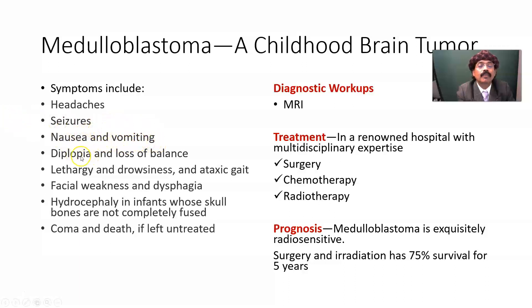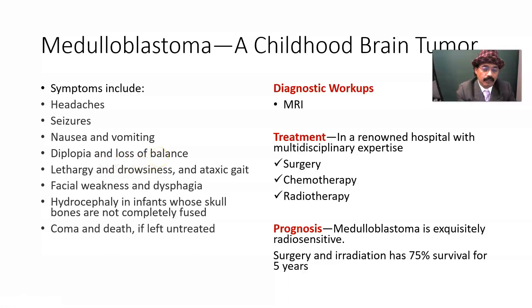Diplopia and loss of balance may occur. Diplopia happens because extraocular muscles are innervated by the third, fourth, and sixth cranial nerves, and these nerves may be damaged by the tumor, leading to diplopia — double vision — because the extraocular muscles may not work together. Loss of balance is also possible because the cerebellum is the part of the central nervous system that maintains balance and equilibrium, so that movement in the right direction, right extent, and right force is lost in case of a cerebellar lesion.